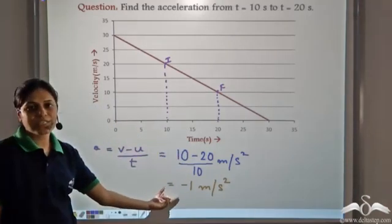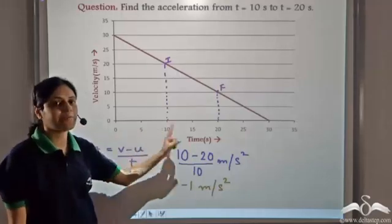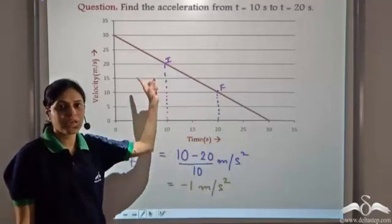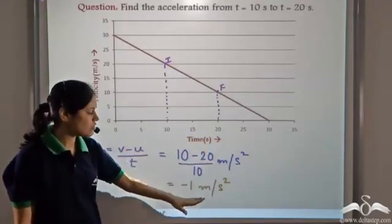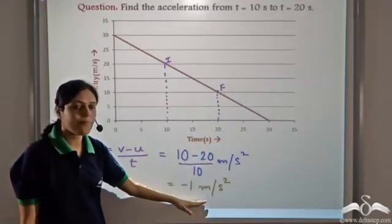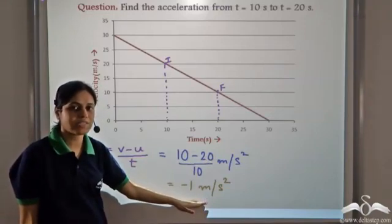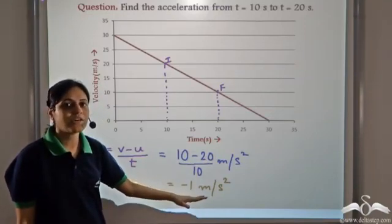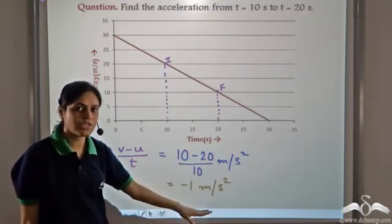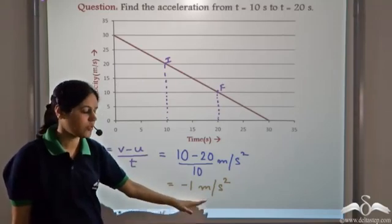This is actually retardation because as time increases, velocity decreases. We get minus 1 metres per second squared as the acceleration, that is a retardation of 1 metre per second squared.